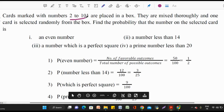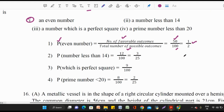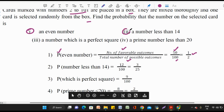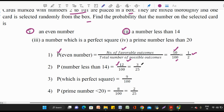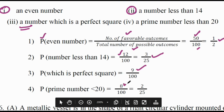Fifteenth question: cards marked with numbers 2 to 101 are placed in a box, mixed thoroughly, and one card is selected randomly. Find the probability that the number is: (i) an even number — there are 50 even numbers out of 100 cards, so P(even) = 50/100 = 1/2; (ii) a number less than 14 — there are 12 such cards, so P = 12/100 = 3/25; (iii) a perfect square — there are 9 perfect squares from 2 to 101, so P = 9/100; (iv) a prime number less than 20 — P = 8/100.